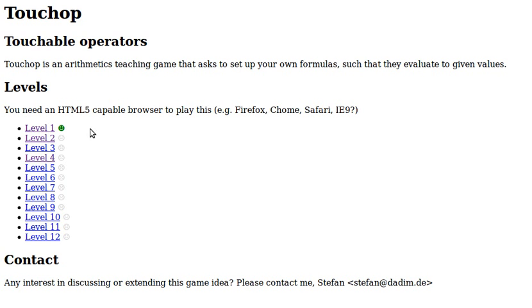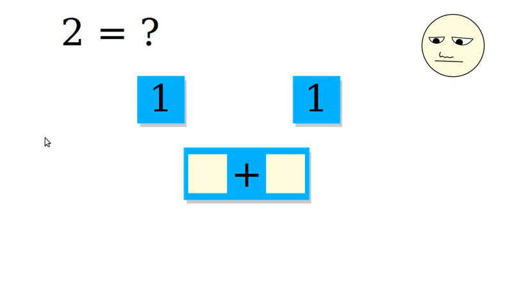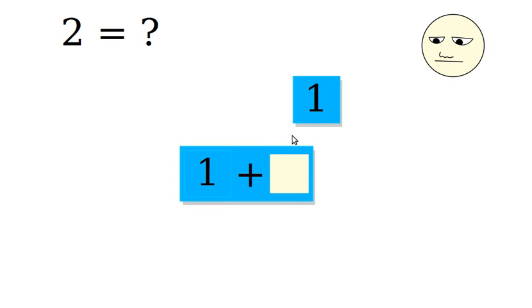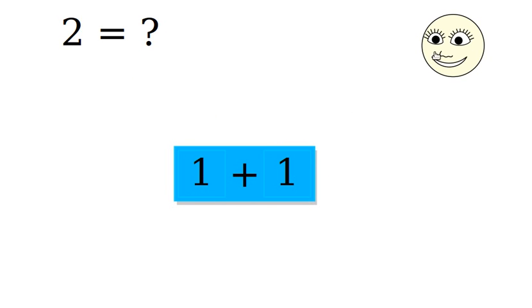Let's dive straight into level 2. In level 2, we have to build the number 2. That is our ingredients. We have 1, 1, and a plus. Let's start. 1 plus 1. Wow, that was easy.